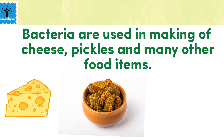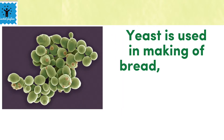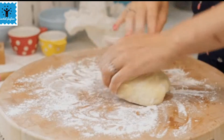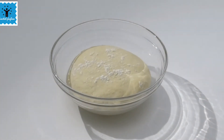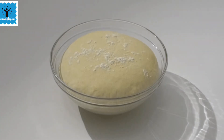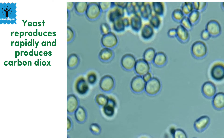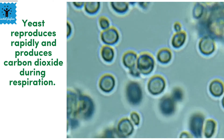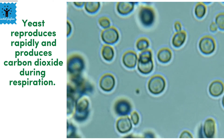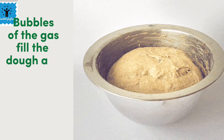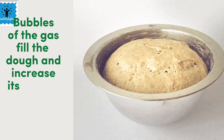Bacteria are also used in the making of cheese, pickles, and many other food items. Yeast is used for making breads, pastries, and cakes. Yeast powder is added with flour while kneading the dough; after some time the dough rises and becomes double in size. This is because yeast reproduces quickly and produces carbon dioxide during respiration, which fills the dough and increases its volume.